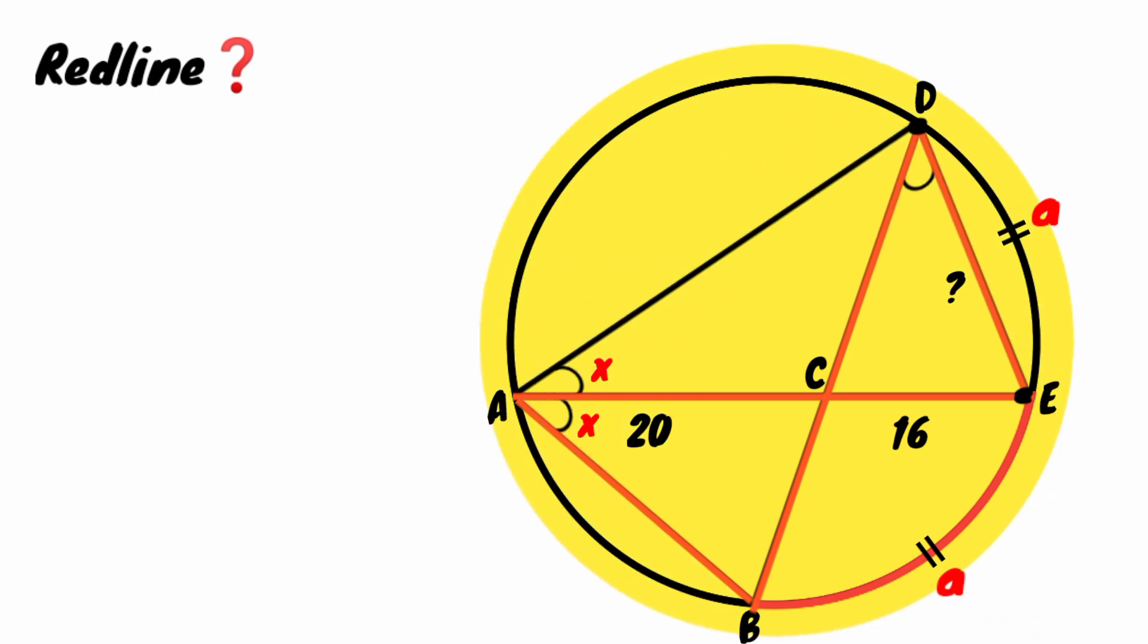Now look at this triangle. It has an angle x and an angle b. Same is for this triangle. It also has an angle x and an angle b. That makes the two triangles similar.